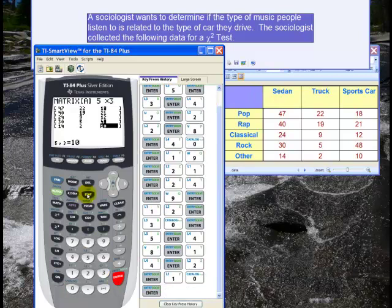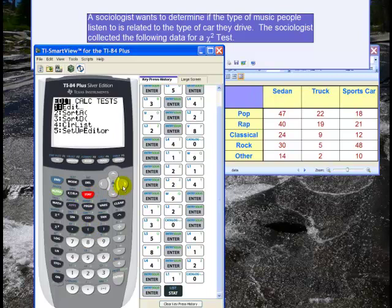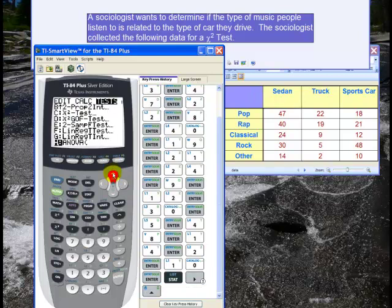Now that I have the data entered into the matrix, I go to STAT, and then Tests. And then I scroll up until I get to chi-squared test, which is C here. And I hit enter.